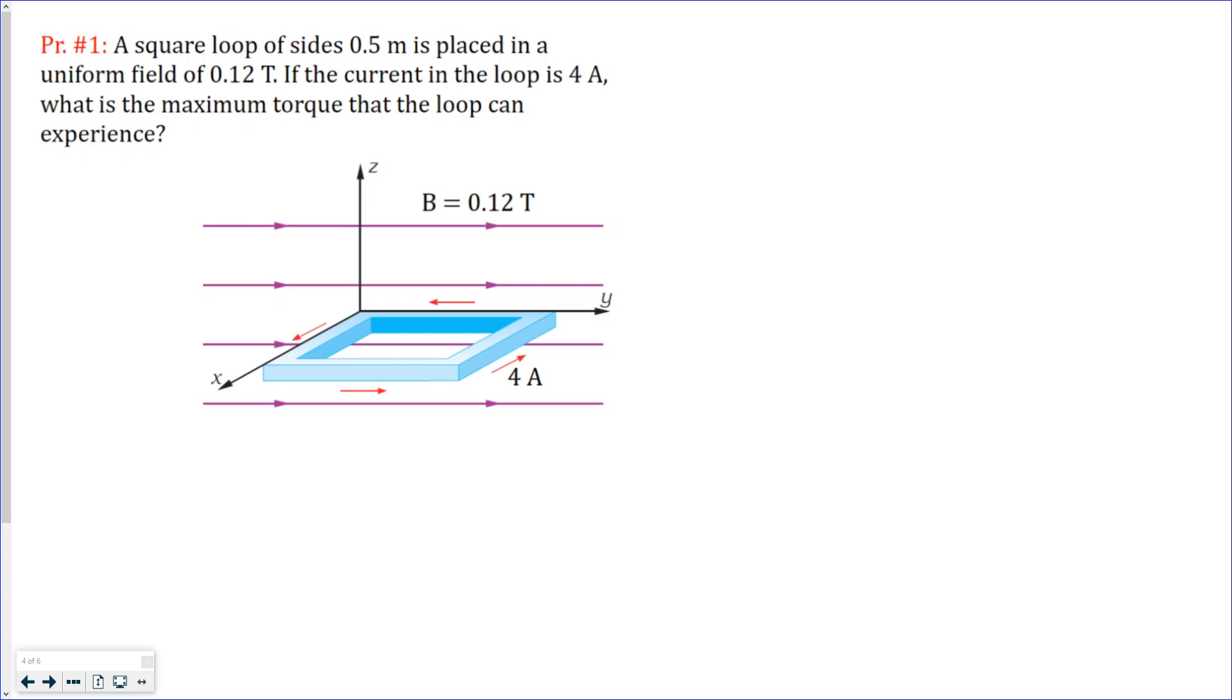We see a rectangular loop located in a magnetic field. First let's write what is given. The sides - we have a square loop so the sides are the same and they have 0.5 meters each. It's placed in a uniform magnetic field which has a magnitude of 0.12 Tesla, and the current which flows through the loop is 4 amperes. We need to find the maximum torque that this loop can experience.